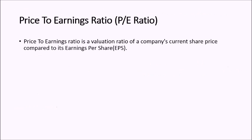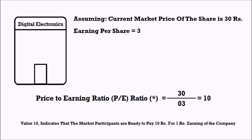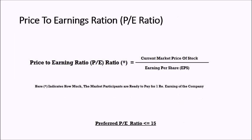What is Price to Earnings Ratio or PE Ratio? PE Ratio is a valuation ratio of a company's current share price compared to its earnings per share. It is obtained by dividing the current market price of the stock by its EPS. For example, if the current market price of Bob's company share is 30 rupees and the EPS is 3, the PE Ratio is 30 divided by 3, which equals 10. This value of 10 represents that for every 1 rupee of earnings, investors are ready to pay 10 rupees.